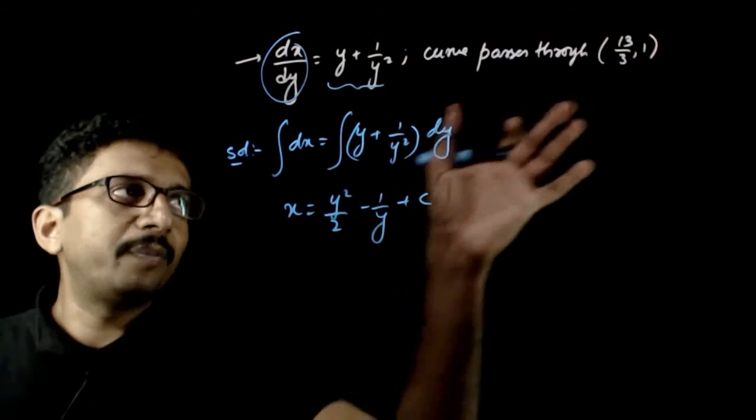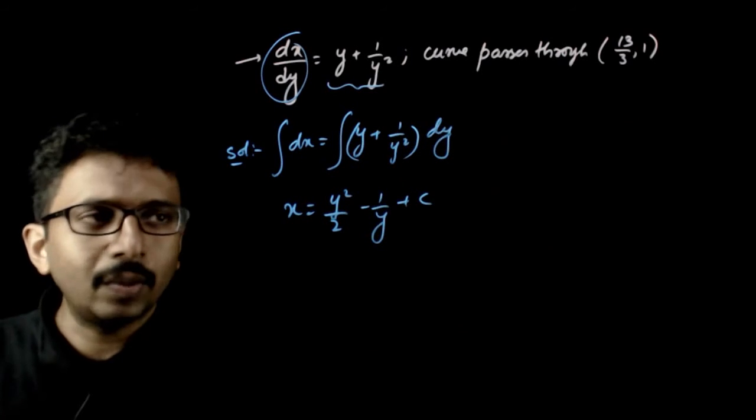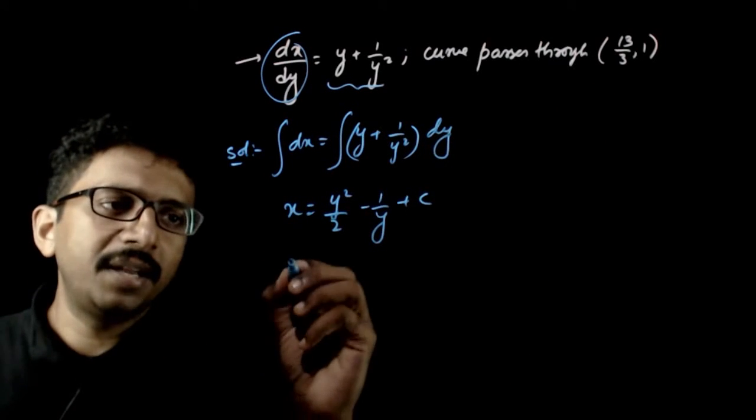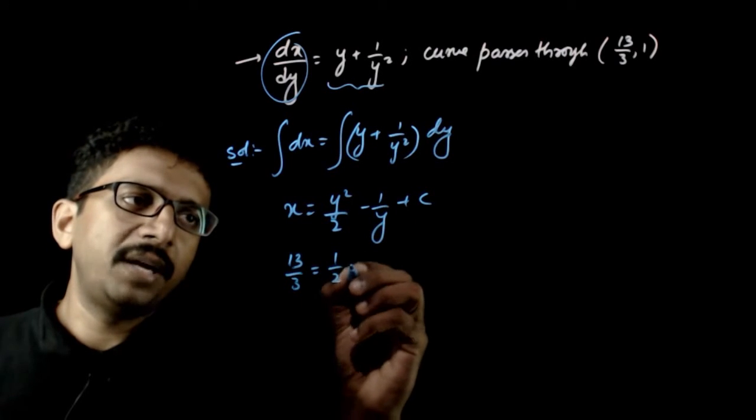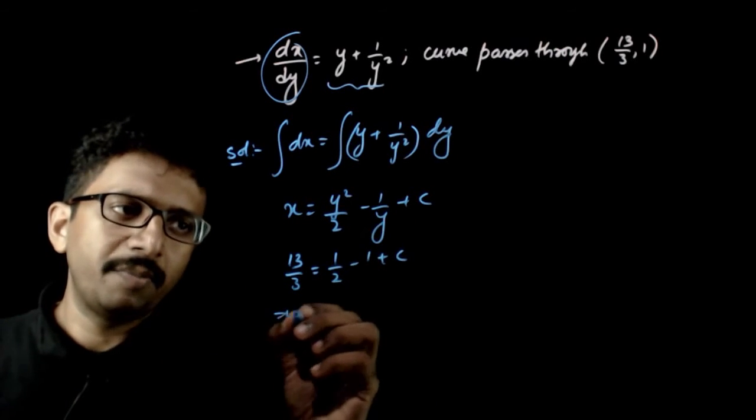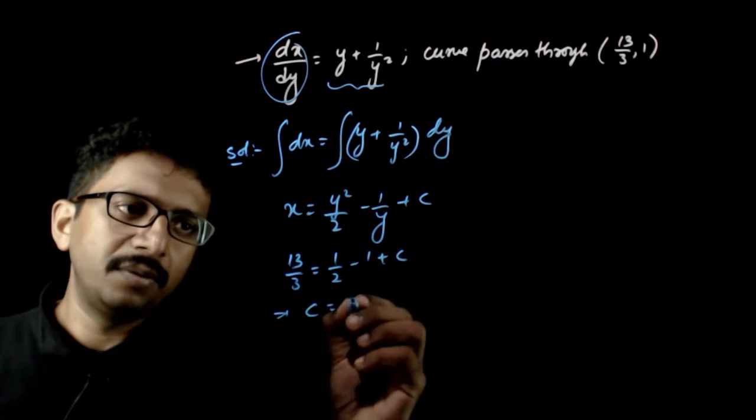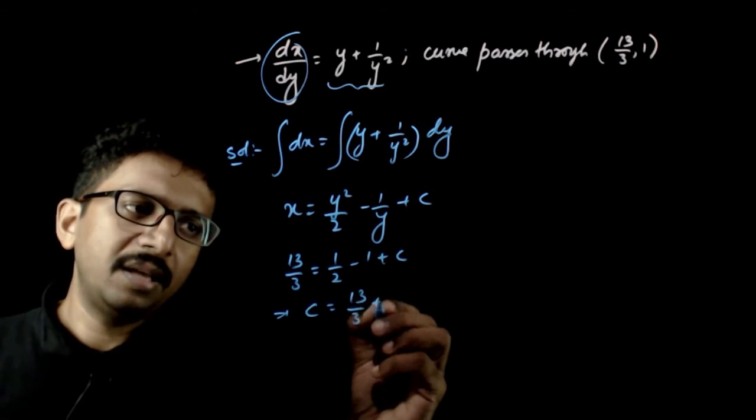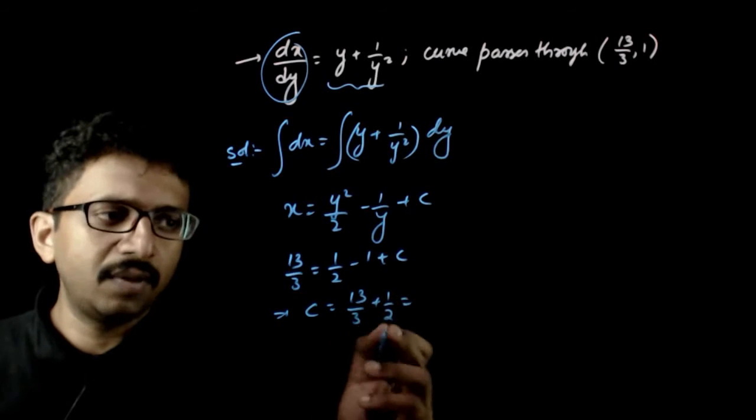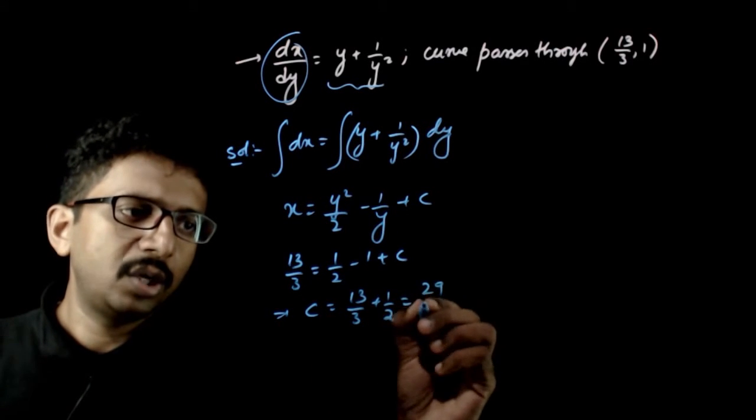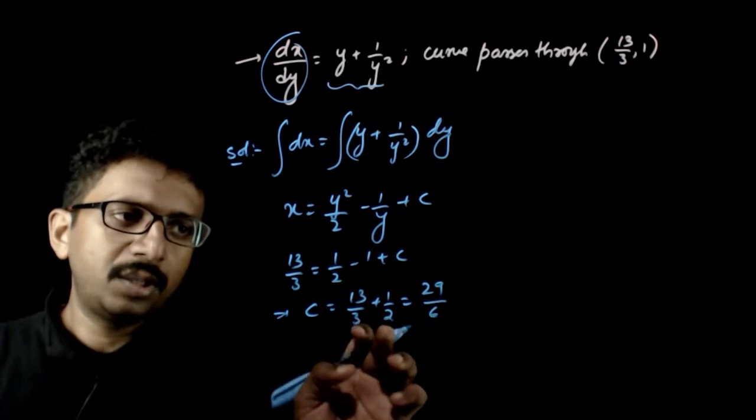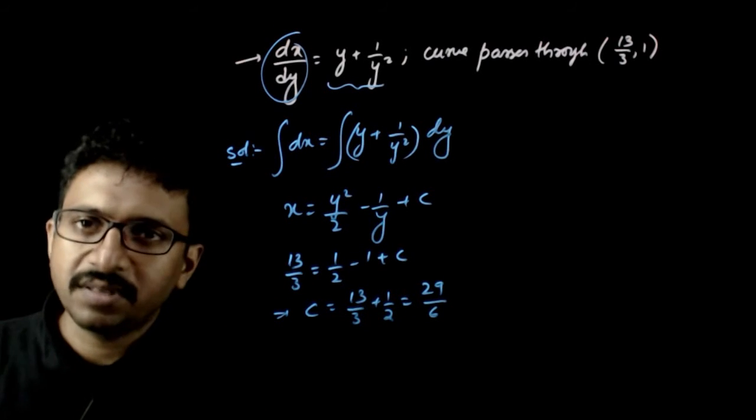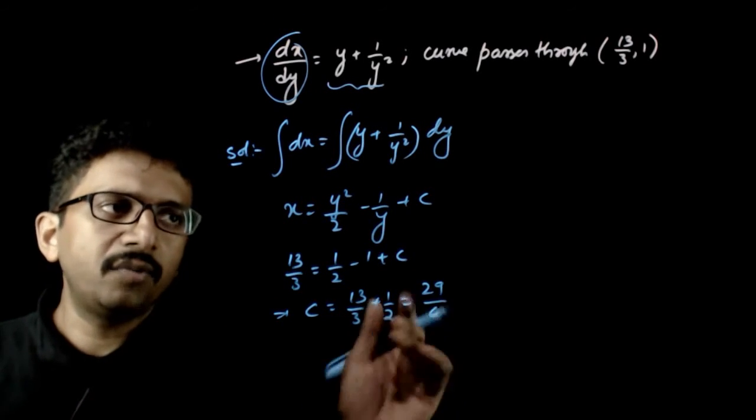Now I want this curve to pass through 13 by 3 comma 1, that is when x is equal to 13 by 3, y will be equal to 1 by 2 minus 1 plus c. This implies c is equal to 13 by 3 plus 1 by 2 that is equal to 26 plus 3, 29 by 6.